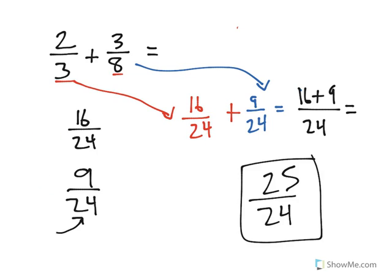There's a simple three-step process to adding when the denominators are not the same, when you have unlike denominators.